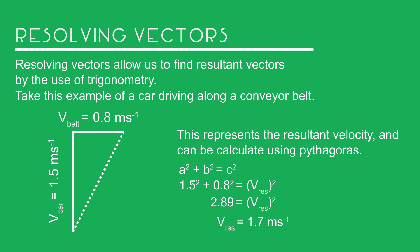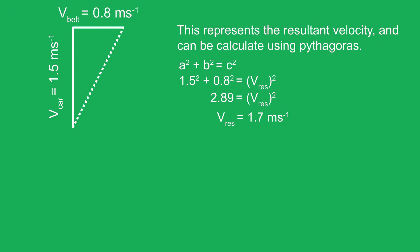Our resultant velocity is 1.7m per second. As this is a vector, the direction will need to be resolved by the use of trigonometry.